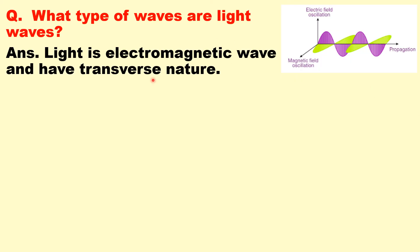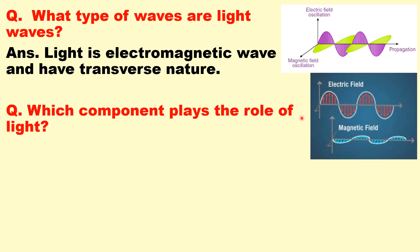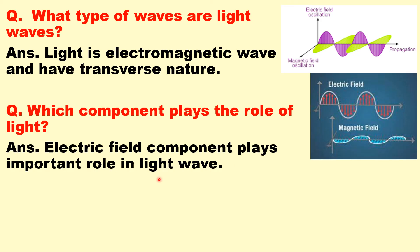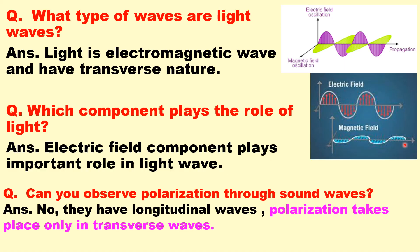What type of waves are light waves? Light is an electromagnetic wave with transverse nature, having electric field vibrations and magnetic field vibrations perpendicular to each other and to the direction of propagation. The electric field vector plays the important role in light waves. Can we observe polarization in sound waves? No, we cannot observe polarization in sound waves because they are longitudinal waves — polarization can only occur in transverse waves.